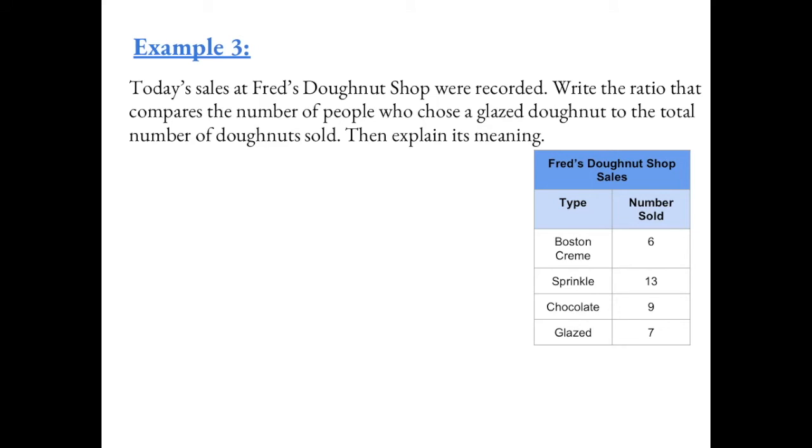Example 3. Today's sales at Fred's Donut Shop were recorded. Write the ratio that compares the number of people who chose a glazed donut to the total number of donuts sold. Then explain its meaning. So the number of people who chose glazed donuts was 7. And we want to compare that to the total number of donuts sold. So to find the total number, we need to add up all the donuts sold.